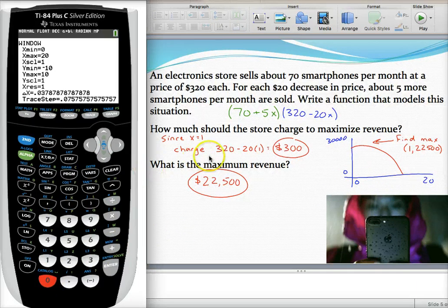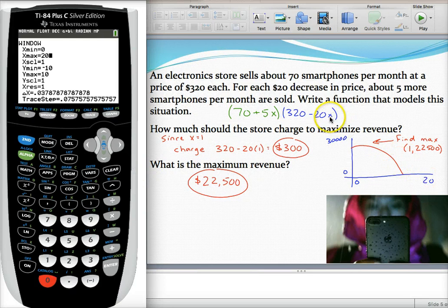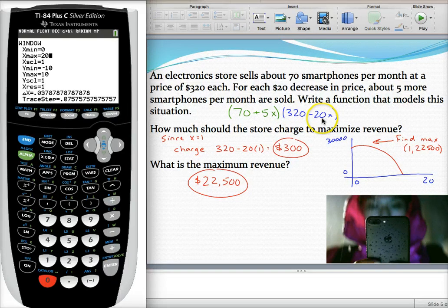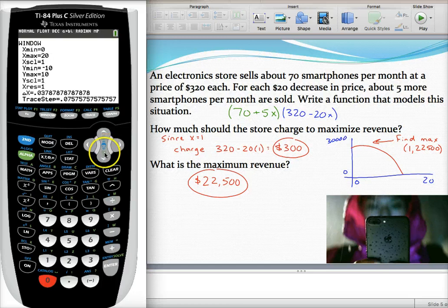If you want to be very particular about that X value, you can figure out, well, how many times could you decrease the price by $20 until you're charging $0. So you can certainly figure that out if you want to be more precise. I think 20 is going to show us what we need to see. I'll leave your X scale the same.